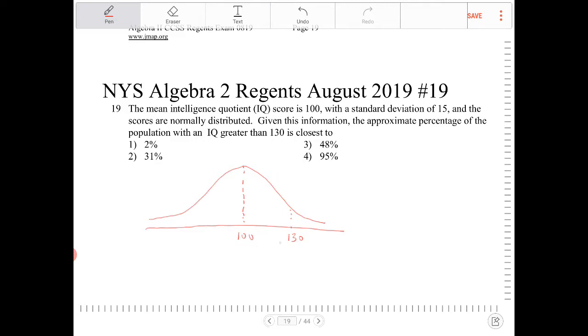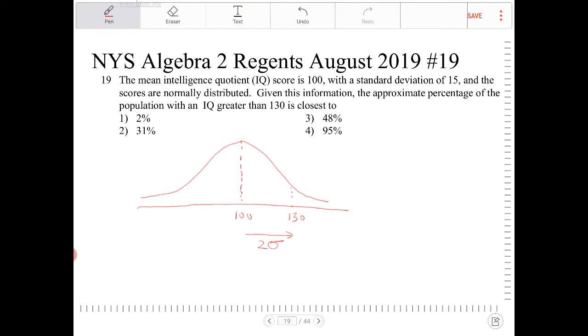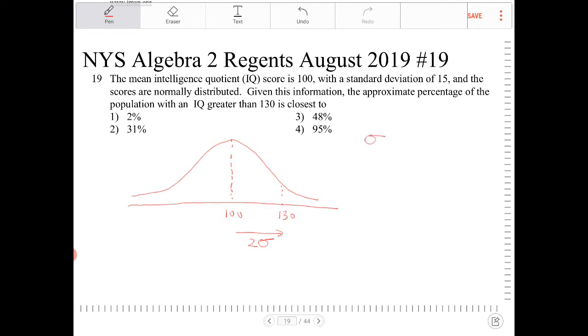But I do know that 100 to 130, this is going to be two standard deviations away. That sigma there is typically used to represent standard deviation. So this is 15, so I move two standard deviations away.